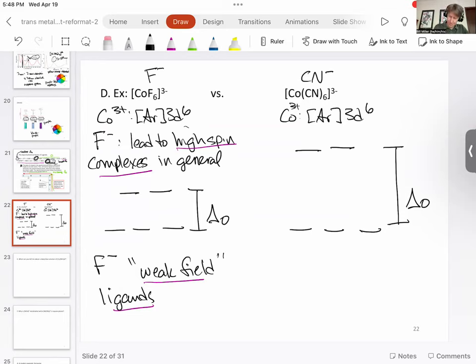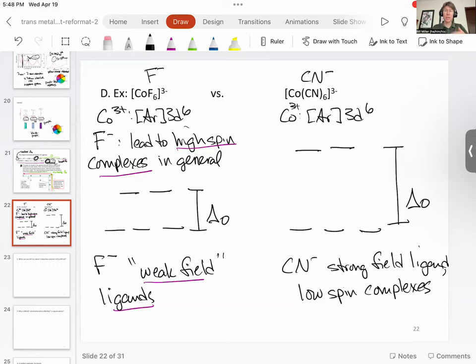Cyanide, on the other hand, is going to be called a strong field ligand and leads to low spin complexes. Crystal field splitting energy is going to be larger than the pairing energy here, and in general, crystal field splitting energy is going to be less than the pairing energy here.